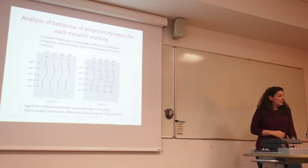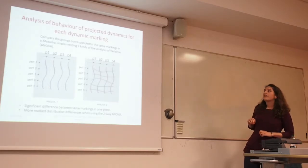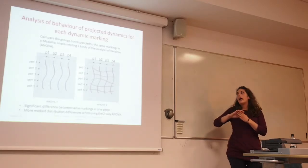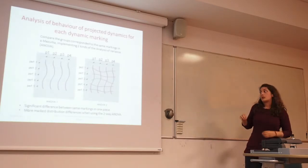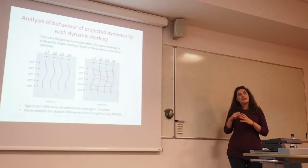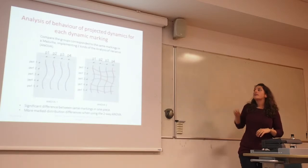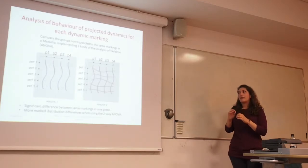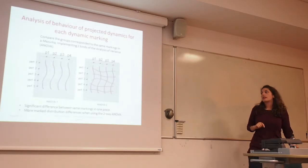The other idea was to analyze the behavior of projected dynamics for each dynamic marking. That means, for example, in one piece of music you can have four piano markings in different locations. We wanted to compare the dynamic values that performances were played at when each marking appeared — so we had four groups of piano markings, each group containing the dynamic values from all performances. We found that these groups were significantly different from one another.